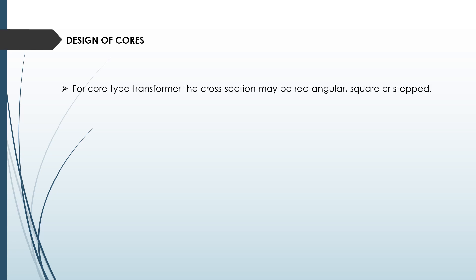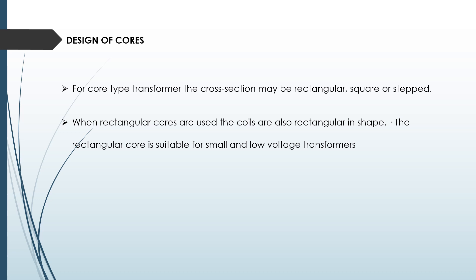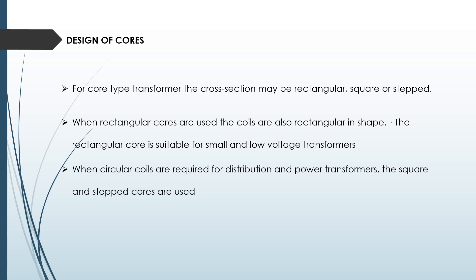Next is design of core. For transformer core, the cross section may be rectangular type, square type, or step type. We will discuss these one by one. When rectangular cores are used, the coils are also rectangular in shape. The rectangular core is suitable for small and low voltage transformers. When circular coils are required for distribution and power transfer, square cores and step cores are used.